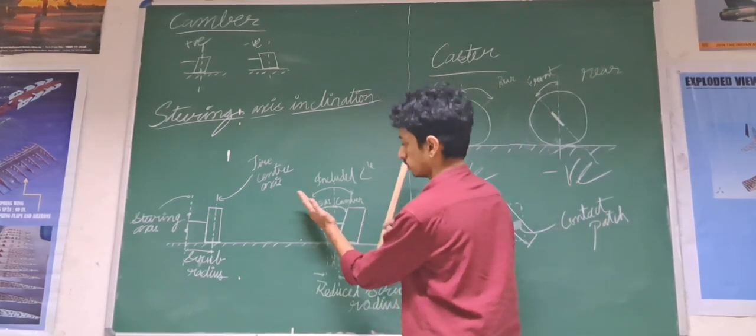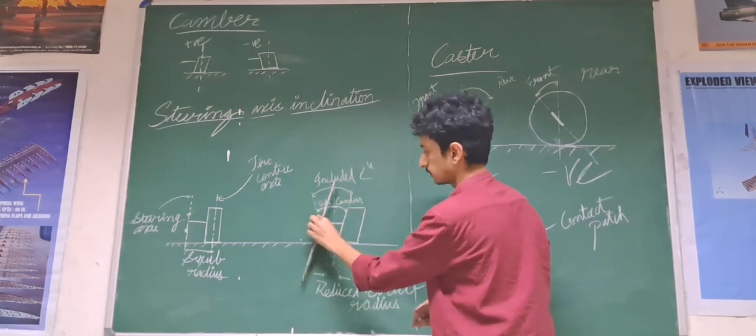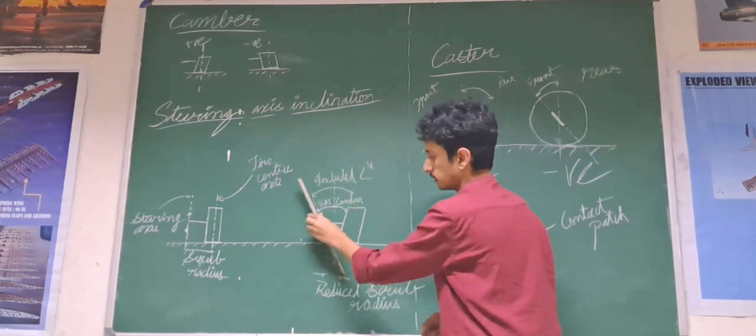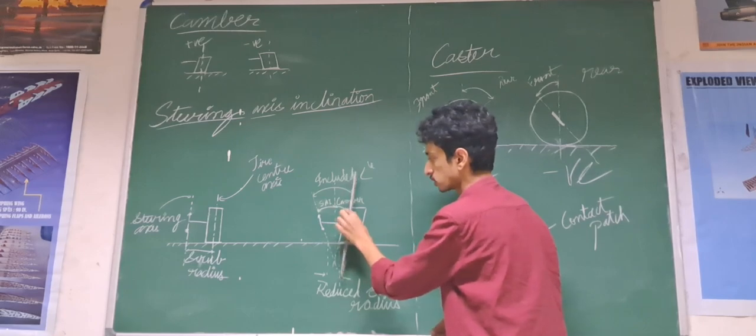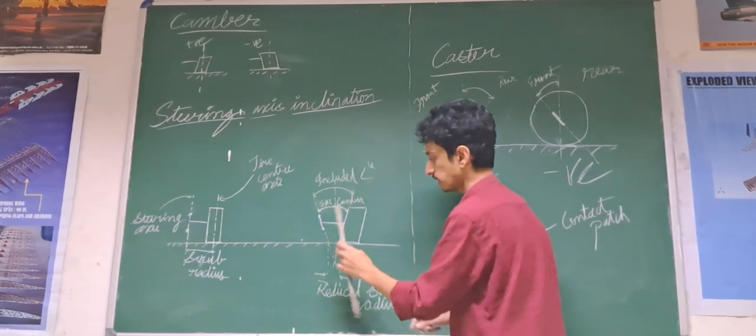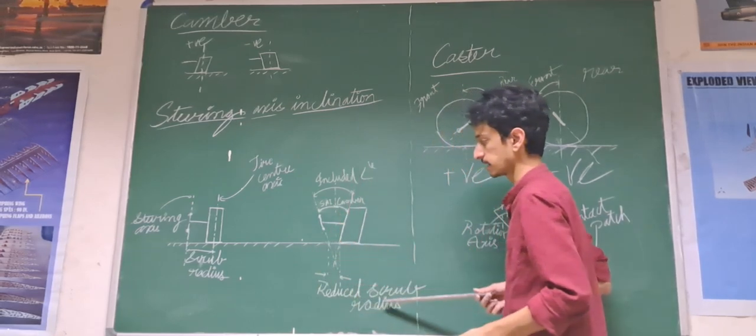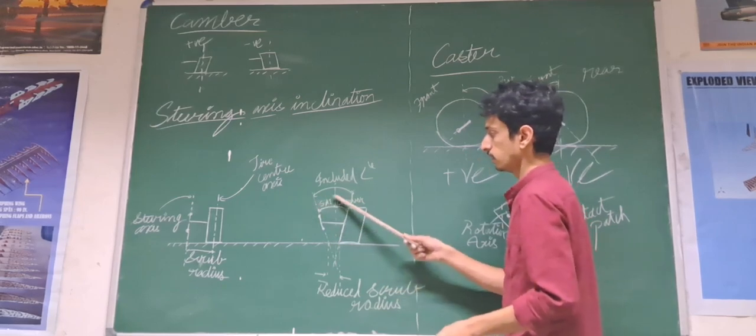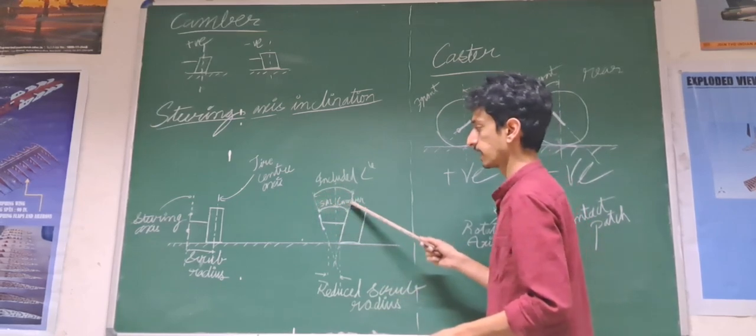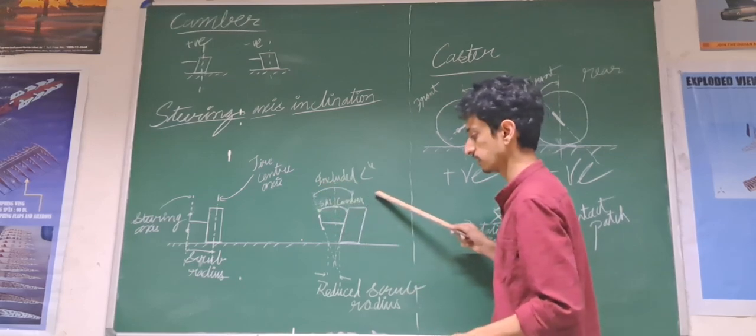And now, steering axis is inclined with respect to the vertical. And the camber, positive cambering is also provided, so that there is reduction of scrub radius. This angle which includes both SAI and camber is known as the included angle.